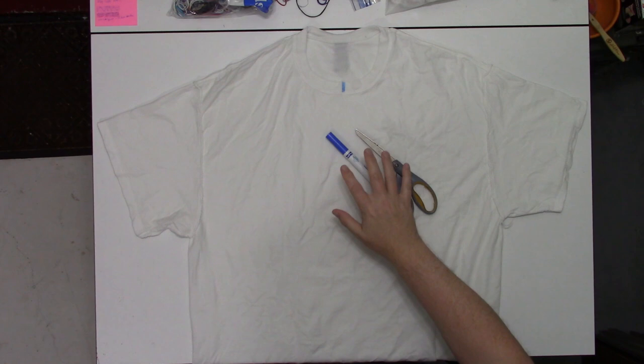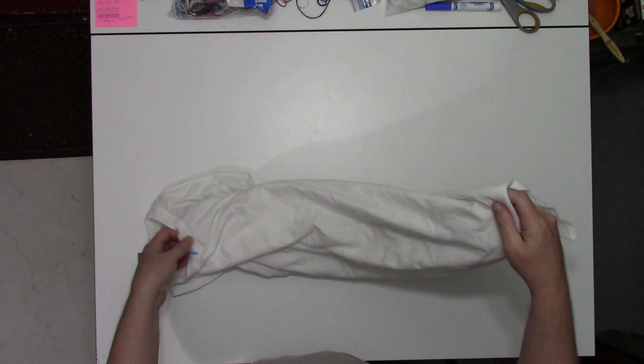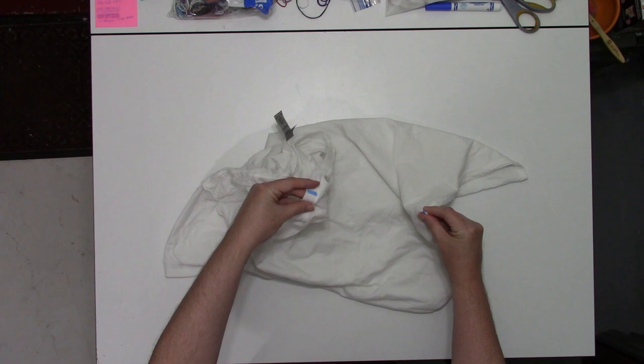As always, starting with a 100% cotton t-shirt that's been soaked in soda ash for at least 20 minutes, and then spun in the washing machine until it's damp. It's already been turned inside out, and I already have the marks down the center to mark the center.